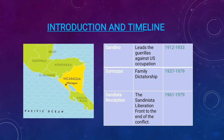Below that on the timeline is the Sandinista Revolution — this is the Sandinista Liberation Front founding to the end of the conflict. The Sandinista Liberation Front was founded in 1961 and they were able to end the conflict in 1979. Note that the Somoza family dictatorship also ended in 1979. It's not a coincidence that both end in the same year, because once the family dictatorship ends, the Sandinistas are able to overthrow the government and gain control.